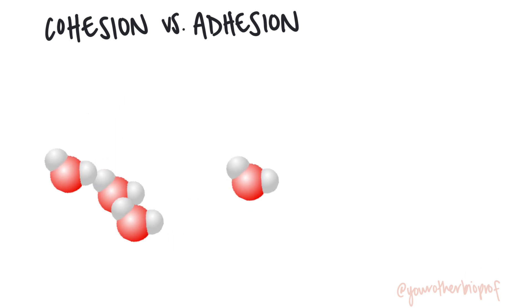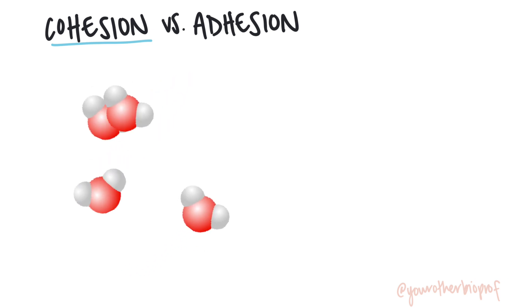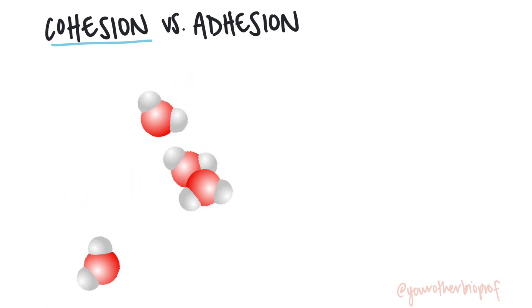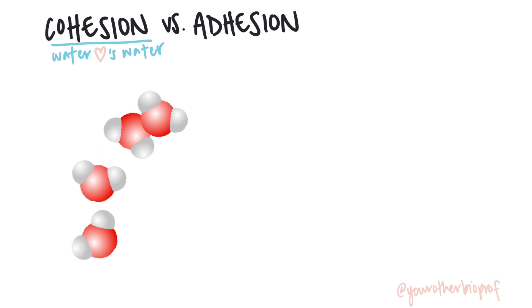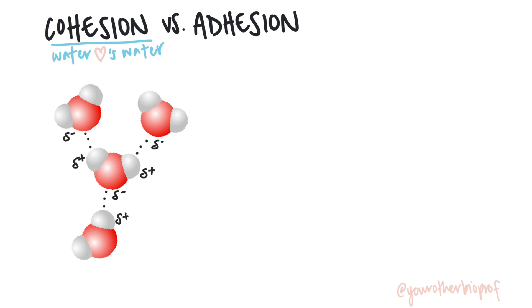Let's start with cohesion. Cohesion is the tendency of water to attract other water molecules. Hopefully you remember that water is a polar molecule, and the negative pole of one water molecule will attract the positive poles of nearby water molecules. Water has cohesive properties because of hydrogen bonding — that's what makes it sticky.